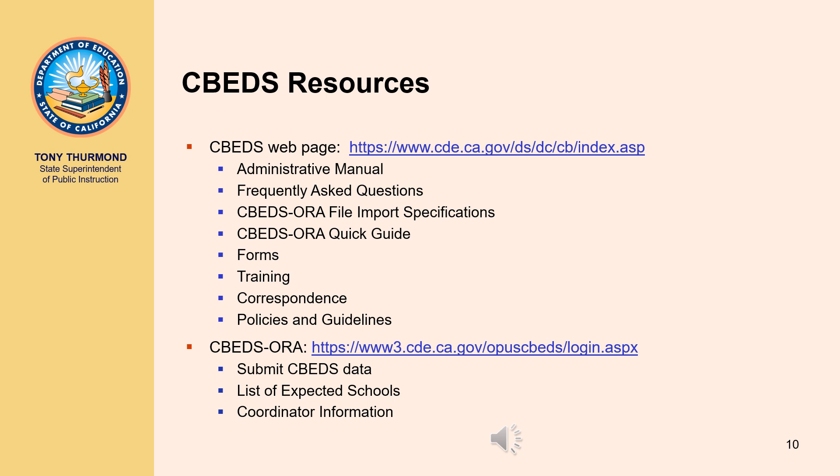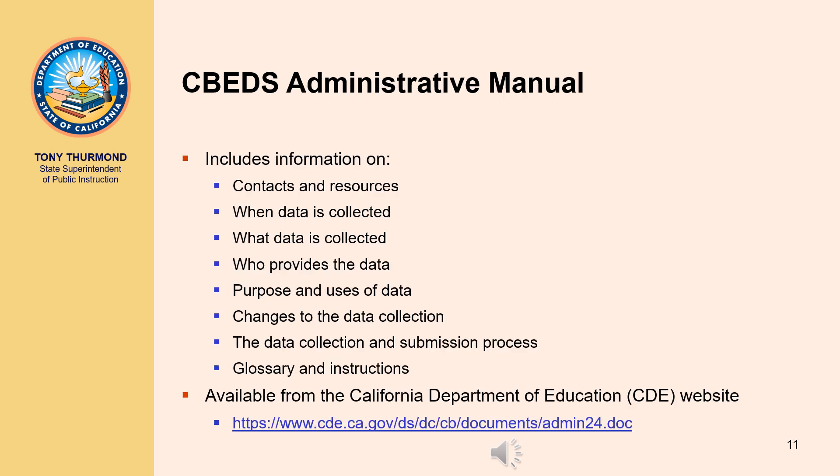Use of CBEDS Aura is required by all LEAs and IRCs, and a CDE-issued username and password are needed to access the application and submit data. CBEDS Aura also contains a list of the schools in your LEA for which you are required to submit CBEDS data, as well as the ability to view and update coordinator contact information. Key resources include the CBEDS Administrative Manual and the list of expected schools.